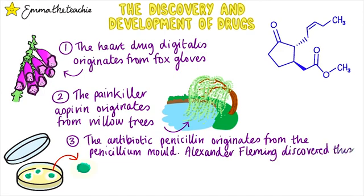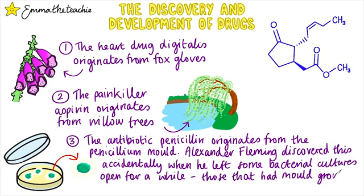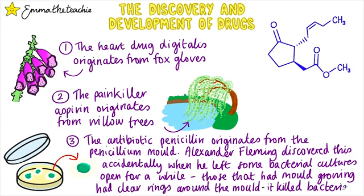The antibiotic penicillin originates from the penicillin mould. Alexander Fleming discovered this accidentally when he left some bacterial cultures open. He found that cultures with mould growing on them had clear rings where bacteria had been killed. He struggled to extract it, but scientists Florey and Chain followed up on his work and were able to extract the world's first antibiotic.